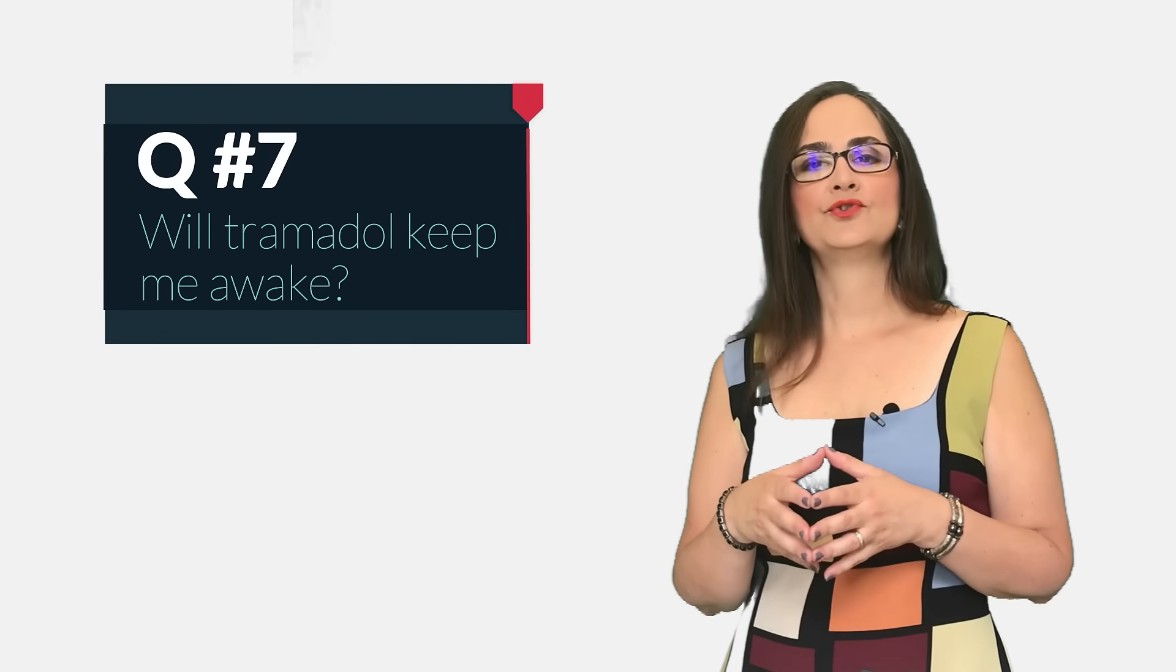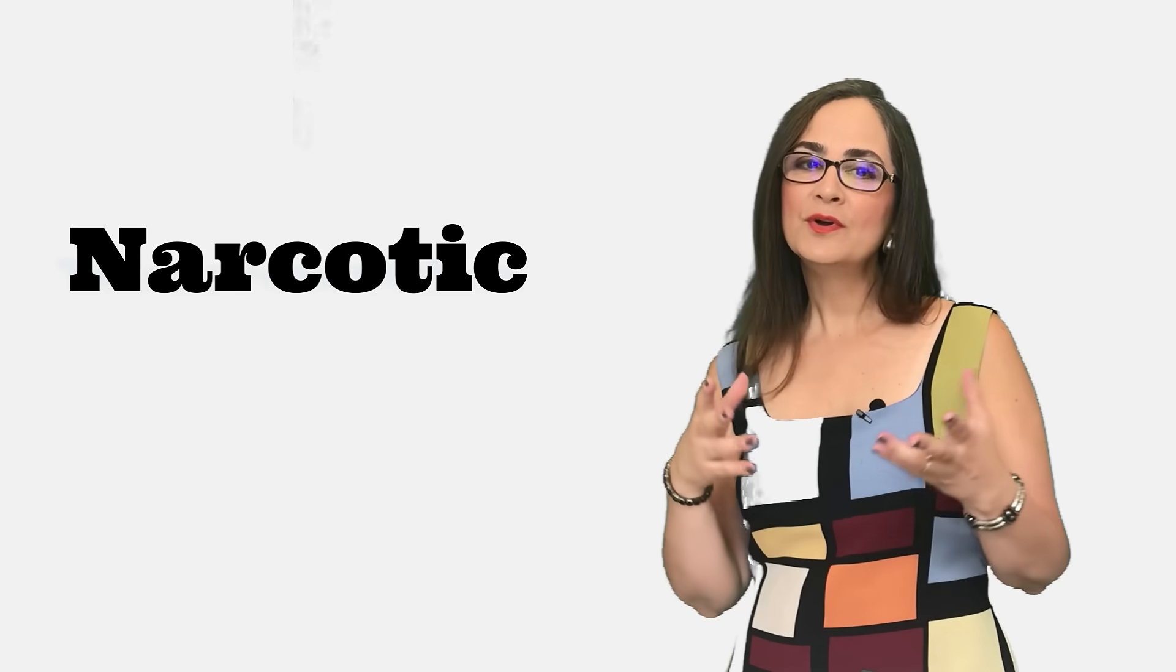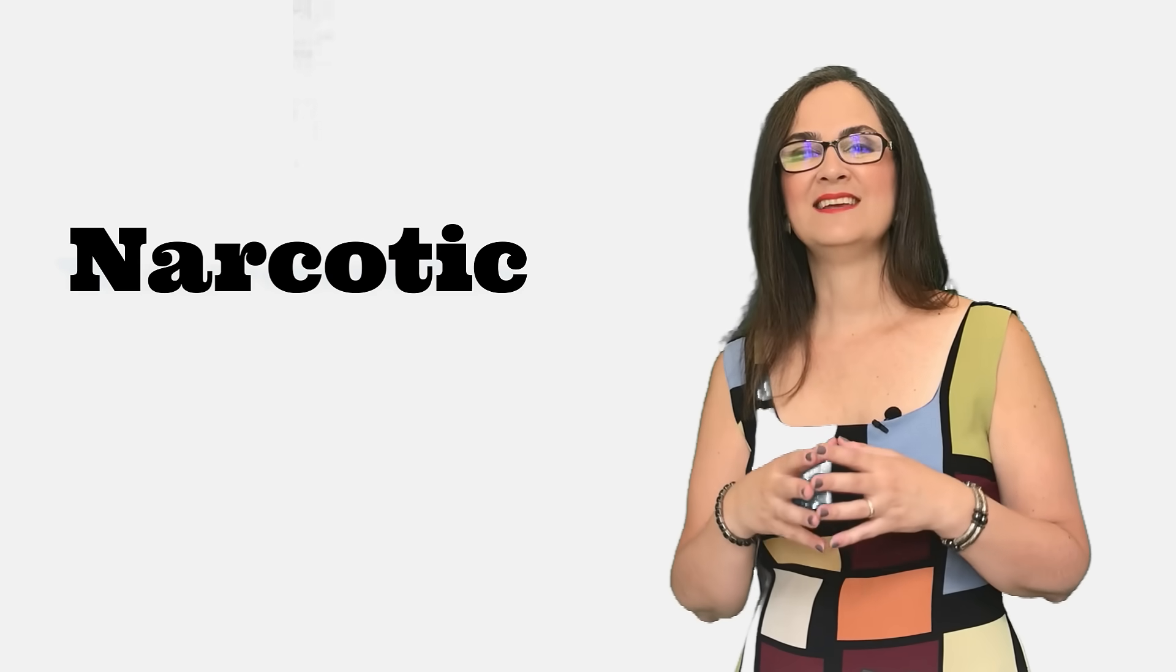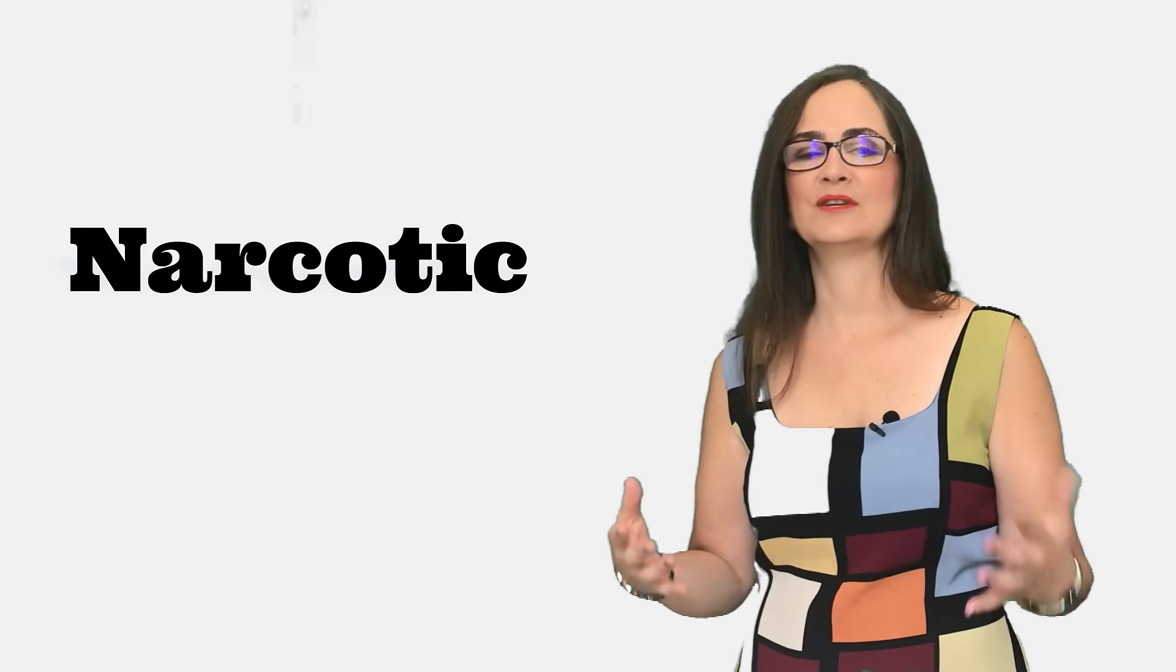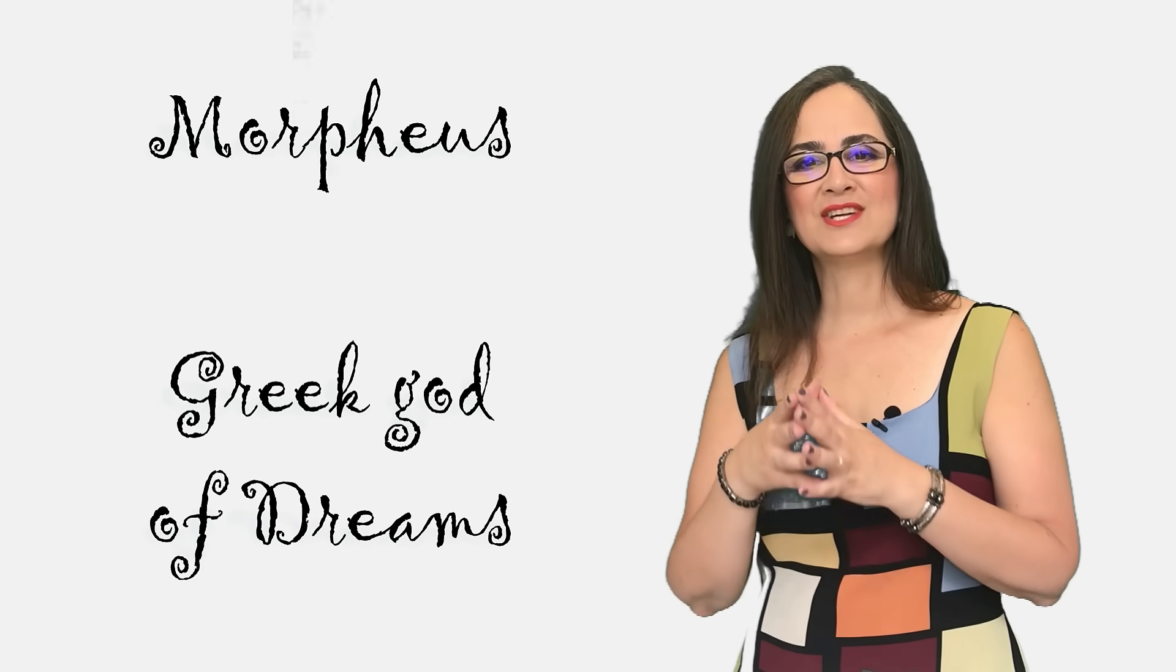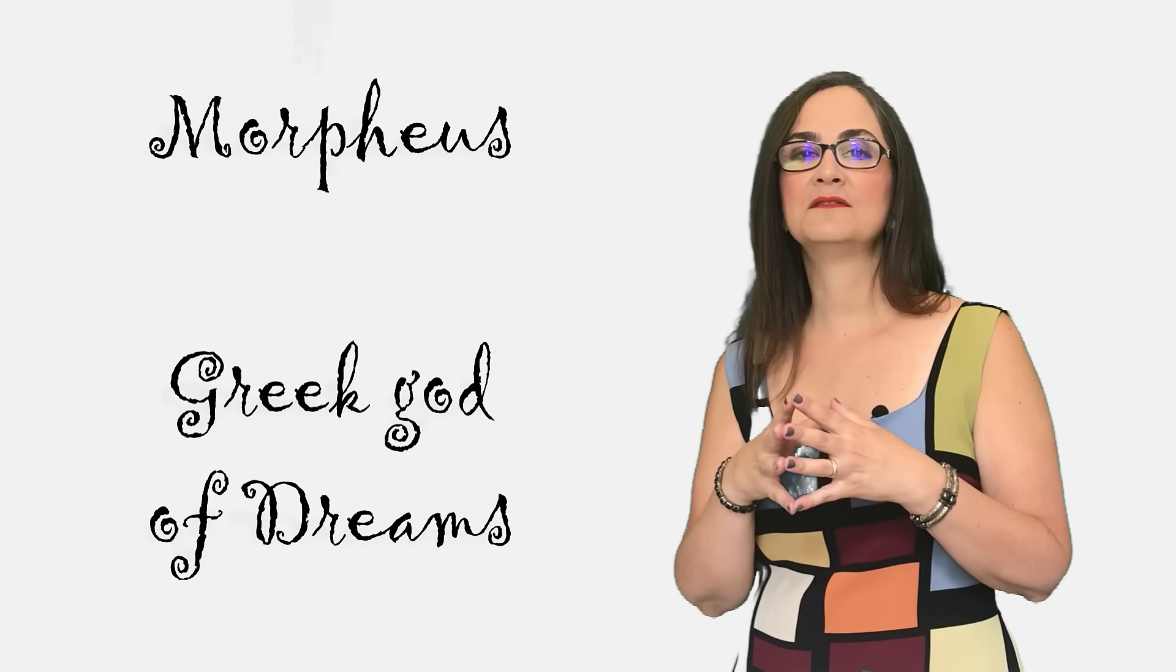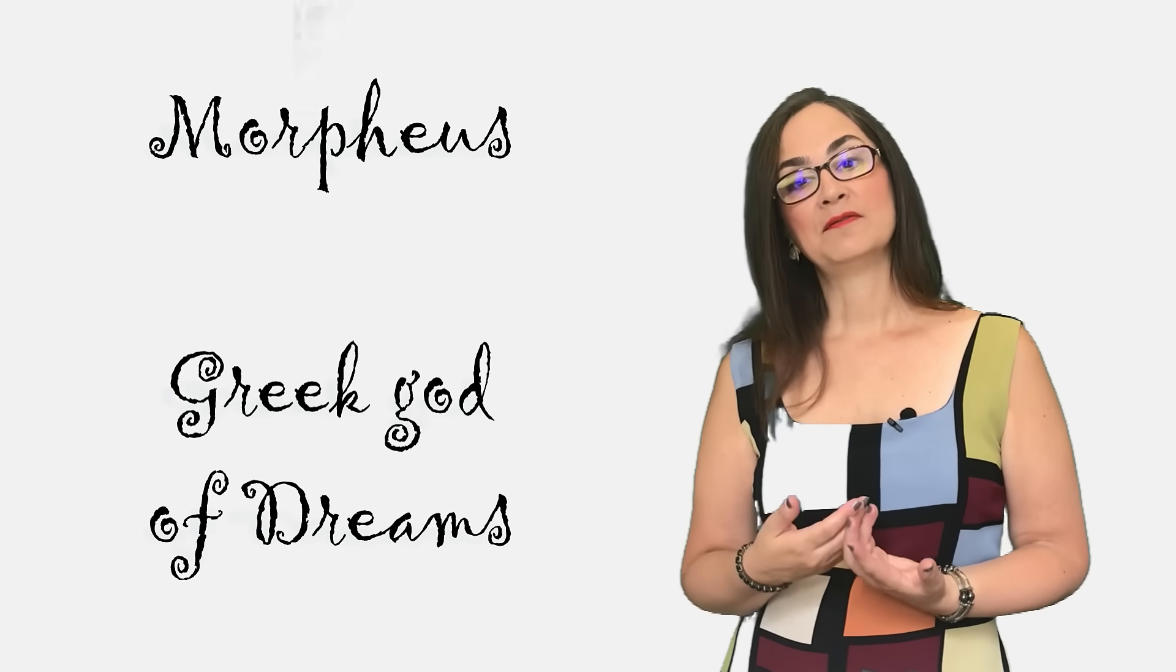Question 7: Will Tramadol help my sleep or keep me awake? Opioids are known as narcotics because they produce a state of stupor, paralysis, sleepiness and relaxation. Morphine, which has been used for thousands of years, is an opioid that was named after Morpheus, the Greek god of dreams.